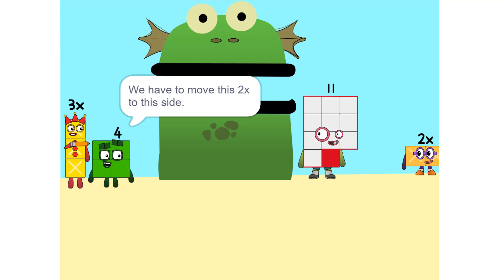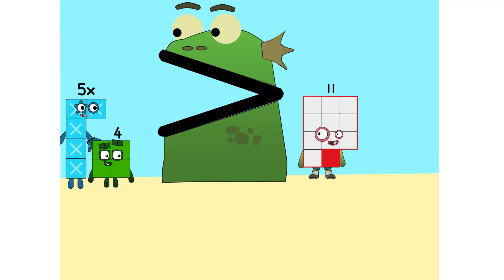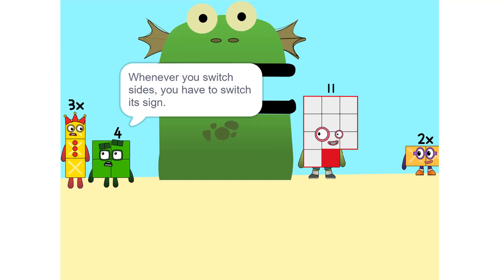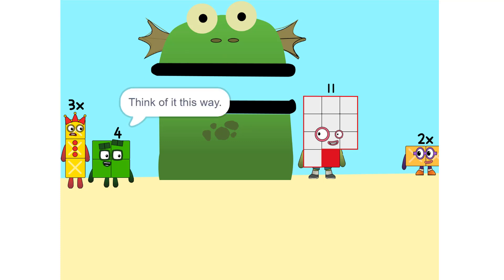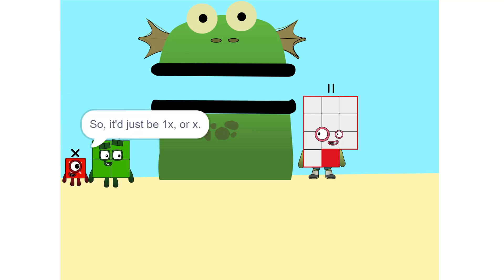Now we have to move things around. We have to move this 2X to this side. Whenever you switch sides, you have to switch its sign. So if it's positive, it becomes negative and vice versa. Why? Think of it this way. You're subtracting 2X from each side. So it just be 1X or X. Correct.